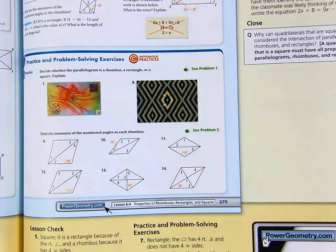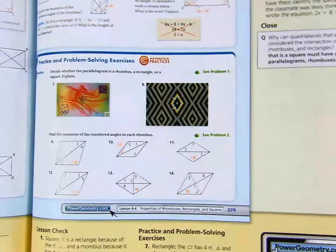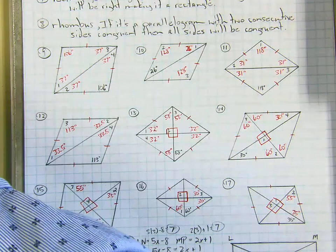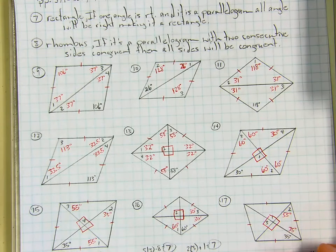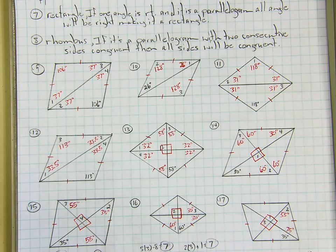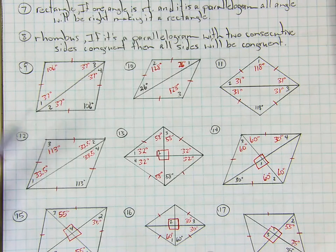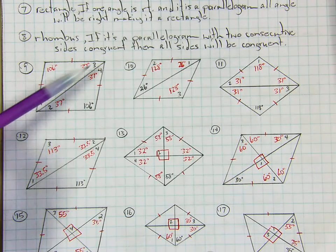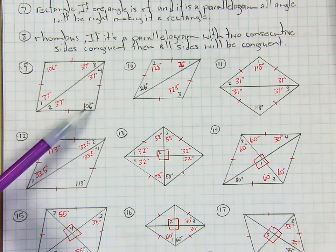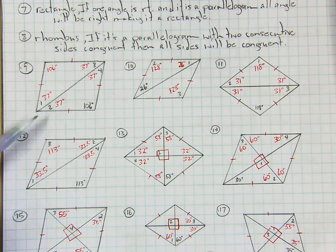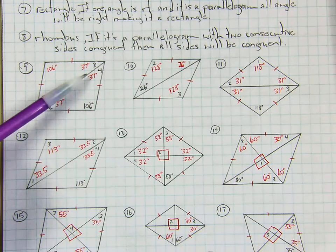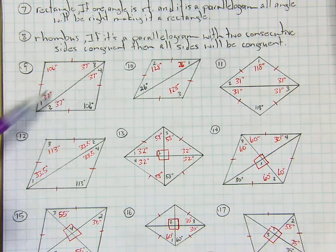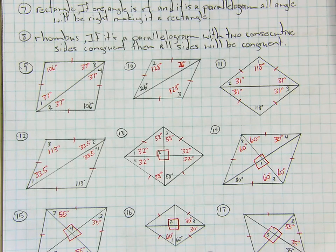The next ones we're just finding the measures of angles. On number 9, they gave us 106 degrees as the vertex angle. These are all rhombuses, so all four sides are congruent. When you draw one diagonal you get two isosceles triangles, and the diagonals bisect opposite angles. I subtracted 106 from 180 and divided by 2, getting 37 for each base angle. So angles 1, 2, 3, and 4 were all 37. Opposite angle is also 106.